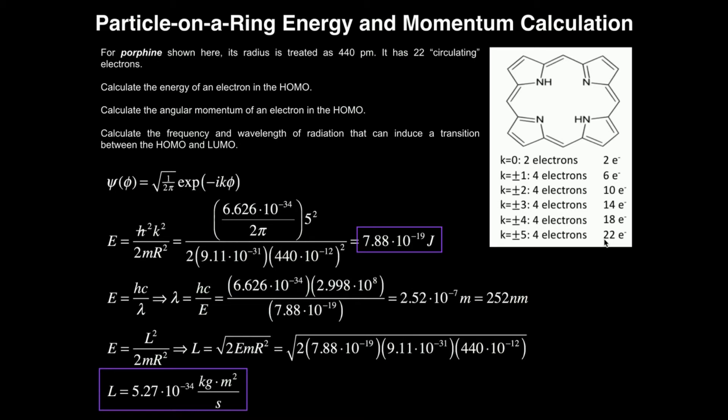So therefore, the highest occupied molecular orbital, which accounts for the highest energy electron, so our last electron, has to be a K of five. And in the calculation of energy using the eigenvalue that was derived using the Schrodinger equation, it doesn't matter if we consider the positive or negative because we're going to be squaring it in this calculation.